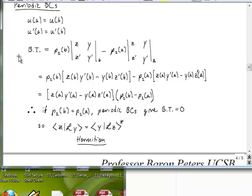And so you can imagine things like sines and cosines will have this property where B minus A is the period of the function. So the boundary term in this case would be expanded out in terms of the Wronskian determinants as P2 at B multiplied by the Wronskian at B minus P2 at A multiplied by the Wronskian at A.